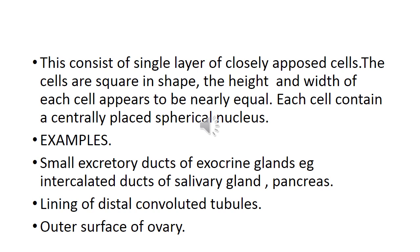As a repetition: this epithelium consists of a single layer of closely opposed cuboid cells. The height and width of each cell appear nearly equal, and each cell contains a centrally placed spherical nucleus. The simple cuboidal epithelium has a very restricted distribution in the body. It is present in the small excretory ducts of exocrine glands, intercalated ducts of the salivary gland and pancreas, the lining of the distal convoluted tubules, and on the outer surface of the ovaries. You should remember these three examples.